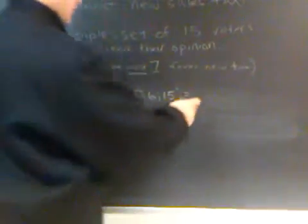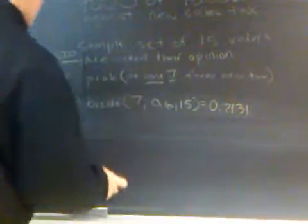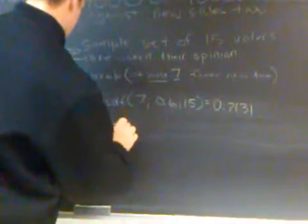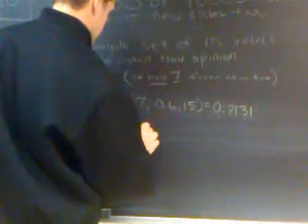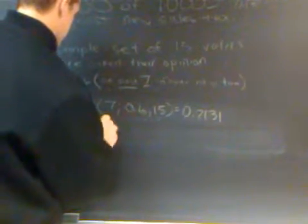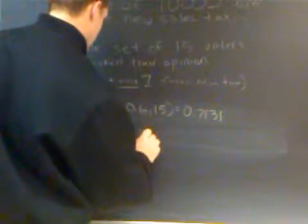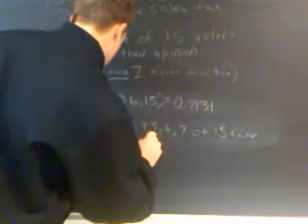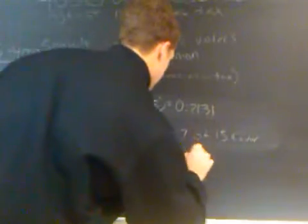We have CDF probability of 0.2131. Which is, in conclusion, probability that at most 7 of 15. Wait a second. That's 0, 1, 2, 3, 4, 5, 6, 7 of 15 favor sales tax equals 0.2131.